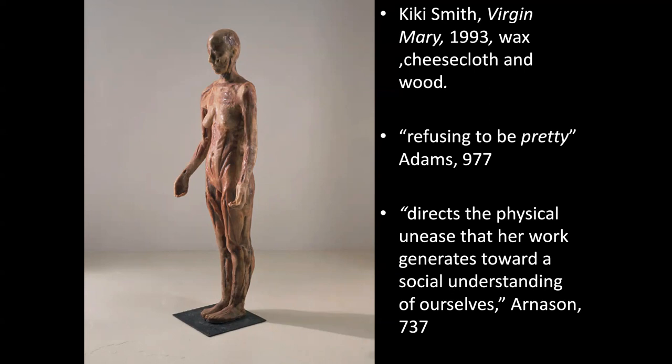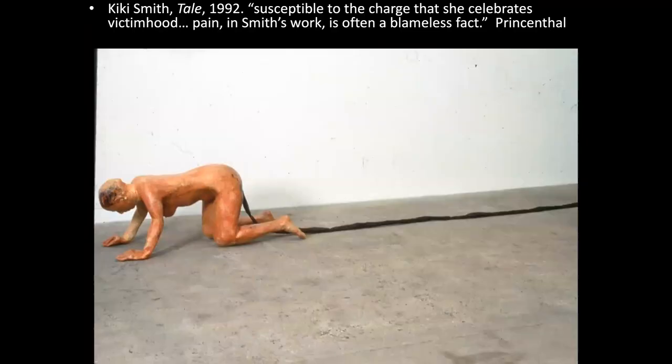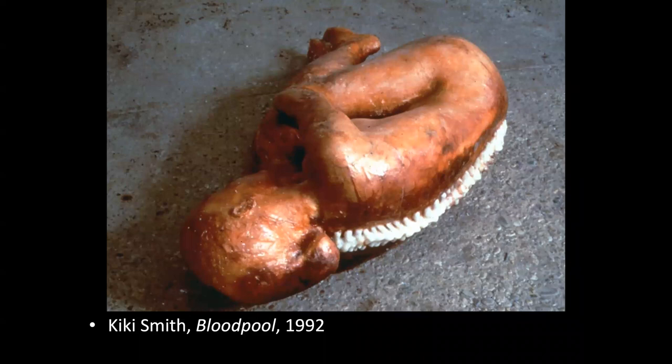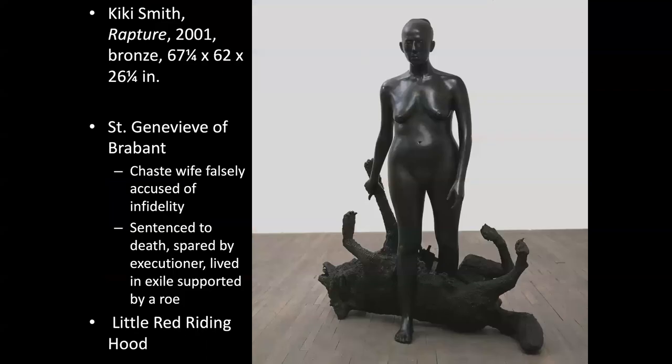She directs the physical unease that her work generates towards a social understanding of ourselves, according to Arneson. She does a lot of trying to poke at her audience and get them to think about themselves and how they relate to the world. Some of these are kind of disturbing. This one's called A Tale — susceptible to the charge that she celebrates victimhood, but pain in Smith's work is often a blameless fact. She's not talking about people being a victim; she's just saying there are certain things humans have to go through — frailty, embarrassment, leakiness. This one's called Blood Pool from 1992.